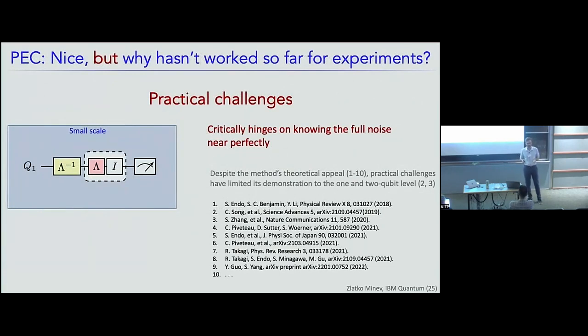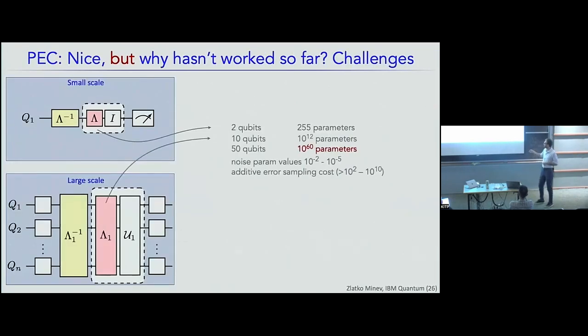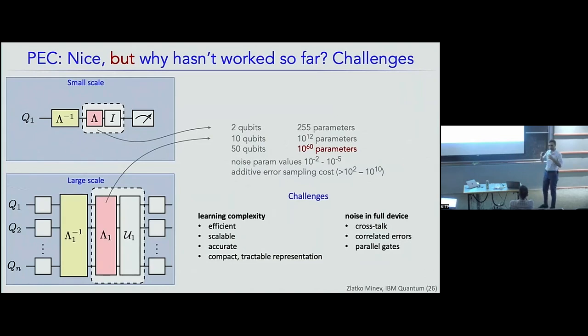This is all very beautiful and nice, but why hasn't it really been implemented in practice so far? And that's because it critically hinges on knowing the full noise perfectly. And as you know and as we've heard, this is very, very tricky and challenging. I don't need to motivate to this audience that if you have 50 qubits, you need to then learn 10 to the 60 parameters for the noise. That's 10 to the 50 gigabytes of classical RAM, which is not really feasible. On top of that, the noise parameters in these modern processors, they're actually relatively good. The numbers are at the level of 10 to the minus 2 to 10 to the minus 5. These are very small numbers that you then need to learn. So you can't do it with additive precision. You want to do it with multiplicative precision. And on top of that, you also need to learn the noise that includes crosstalk, correlated errors, you know, parallel gates. So you need to find and handle this complexity in an efficient, scalable, accurate, and compact way.